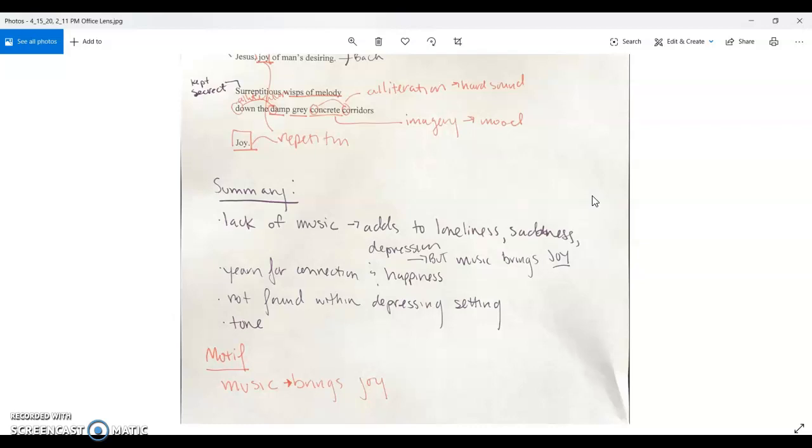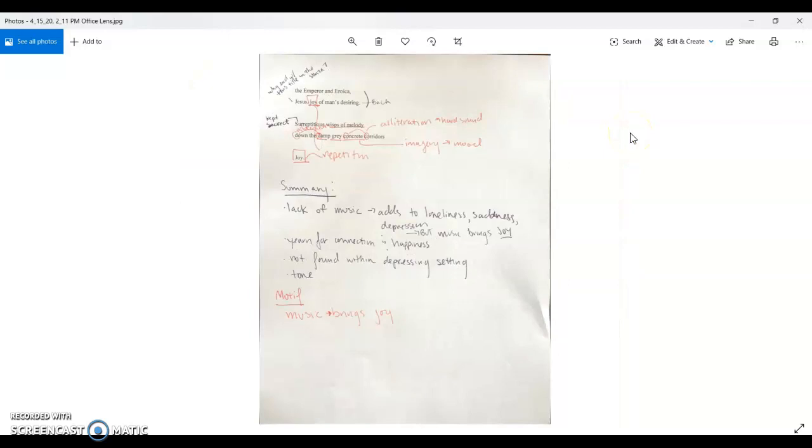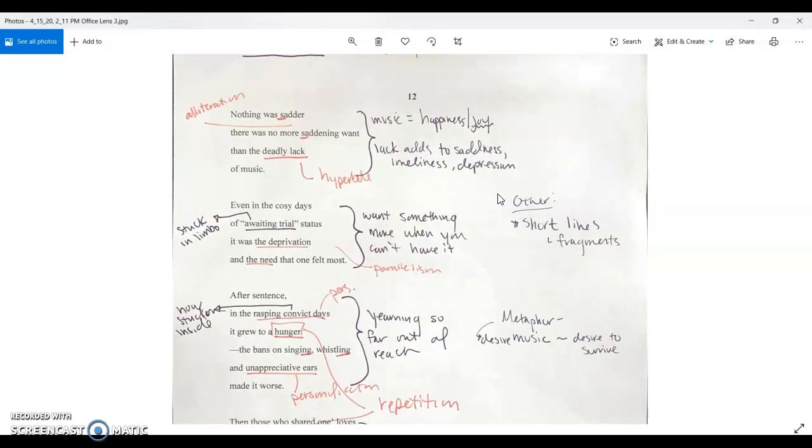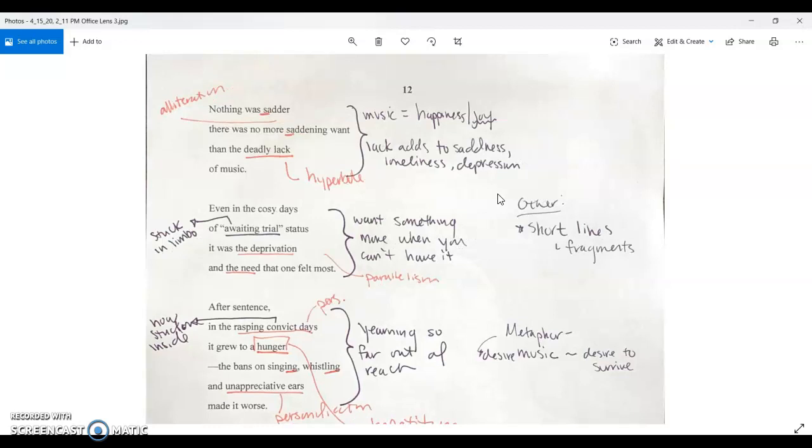Lastly, he pulls it together by bringing back that where he is is not joyful at all, but he ends with the word joy because that's what he's choosing to focus on. That's basically what the poem is about. In the dark purple, I tried to do my little notes about the poem.